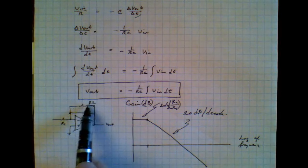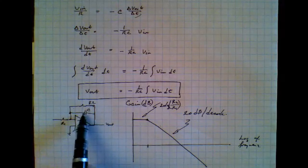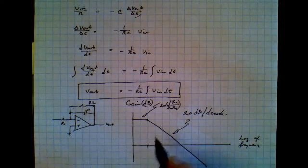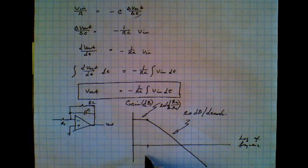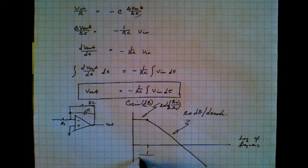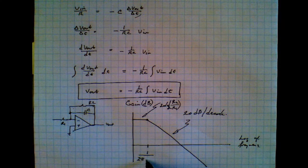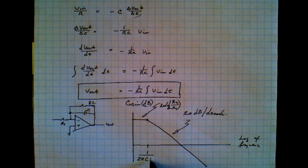which would have been infinite with just a capacitor. So the frequency at which the gain starts rolling off is 1 over 2 pi C R2.